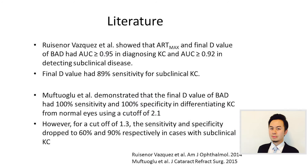In the literature, studies showed that the ART max and the final D-values of the BAD have an AUC of more than 0.95 in diagnosing keratoconus, and also an AUC of 0.92 in detecting subclinical cases. The final D-value has 89% sensitivity for subclinical keratoconus. Another study demonstrated 100% sensitivity and specificity in differentiating keratoconus from normal eyes with a cutoff of 2.1; however, using a lower cutoff, sensitivity and specificity drop for subclinical keratoconus.